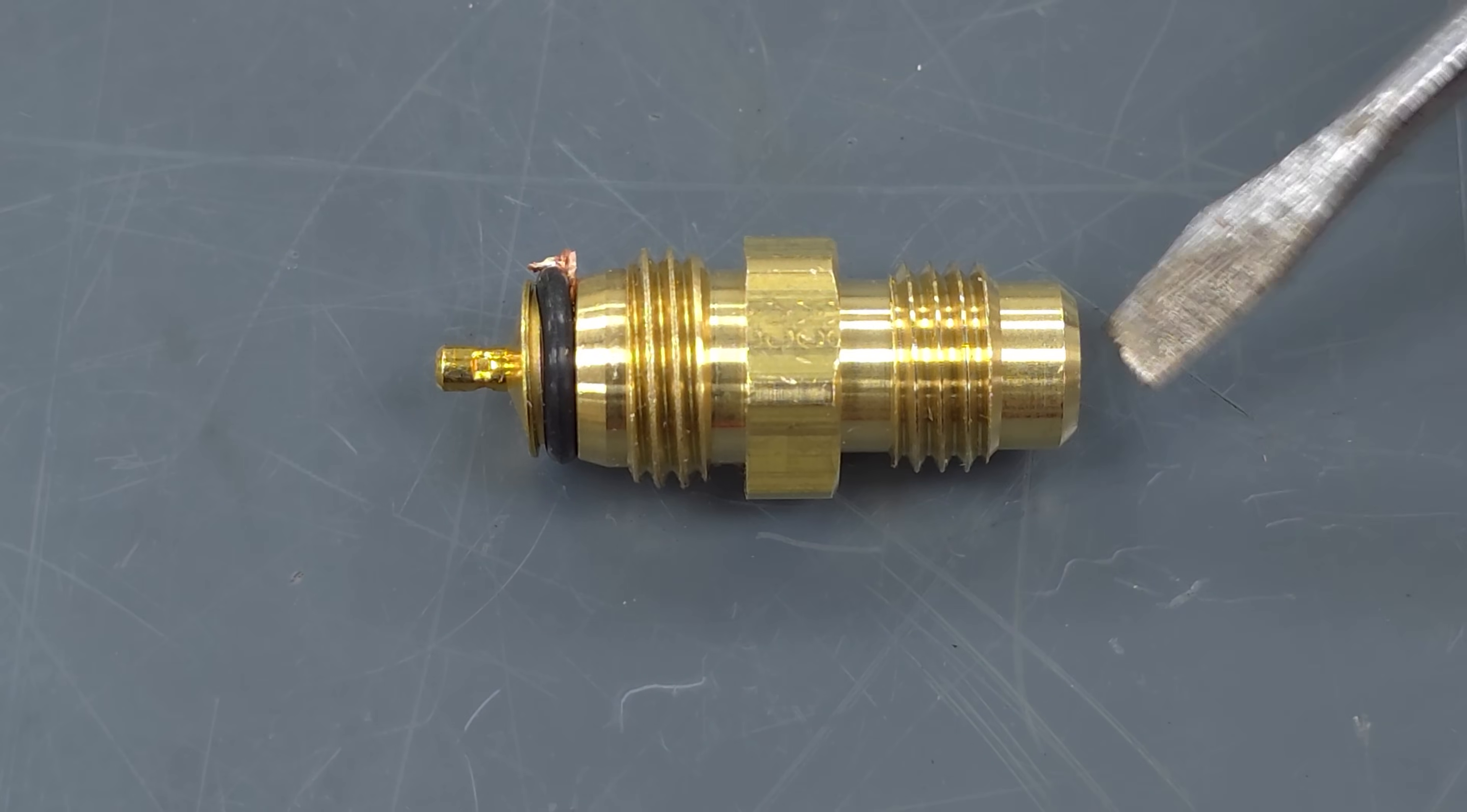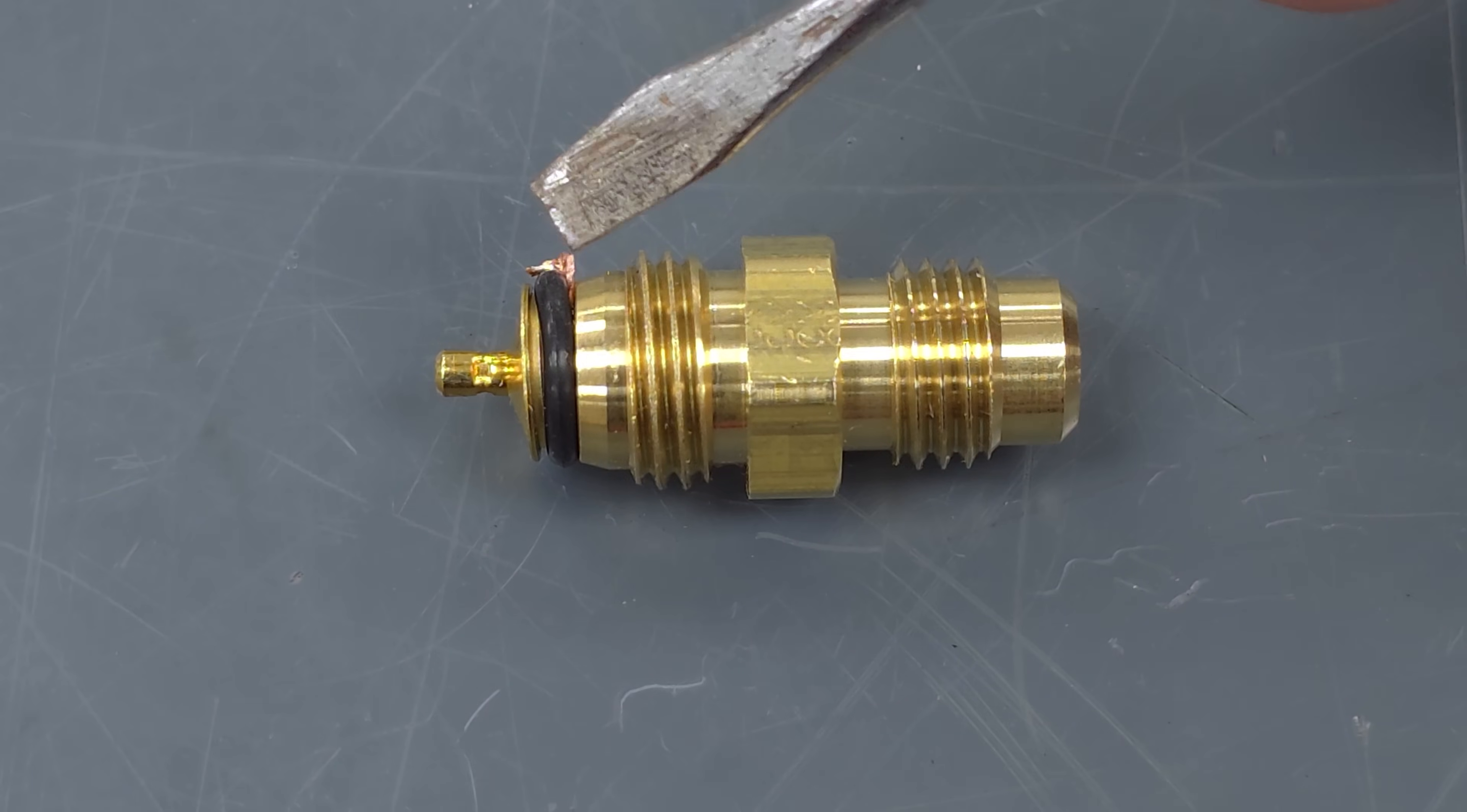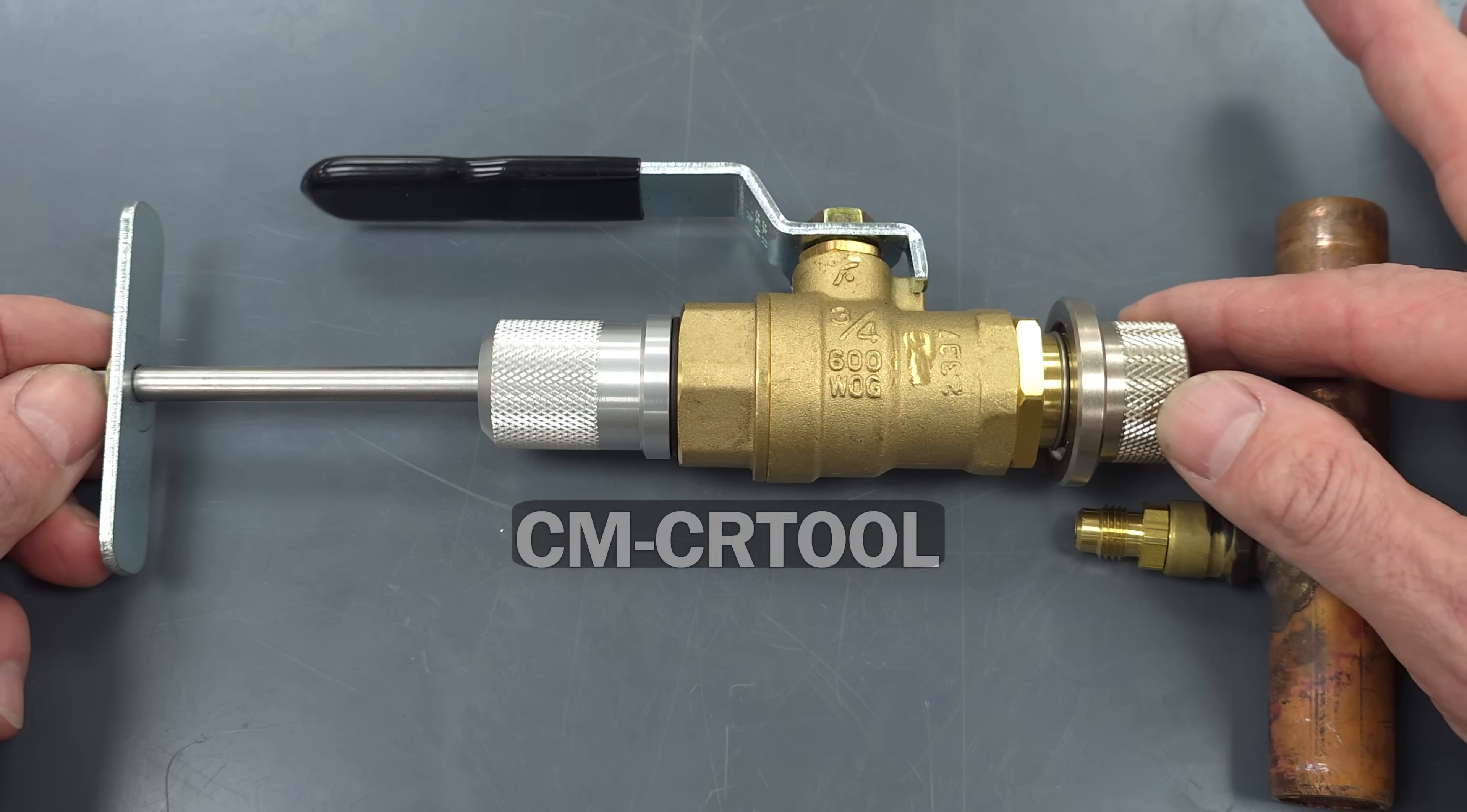Now that we showed how the Cormax valve assembly works if you have some type of a leak over here at the port maybe due to like a copper shard or something like that stuck up against that rubber grommet I'm going to show you how to replace this even if you have pressure in the system.